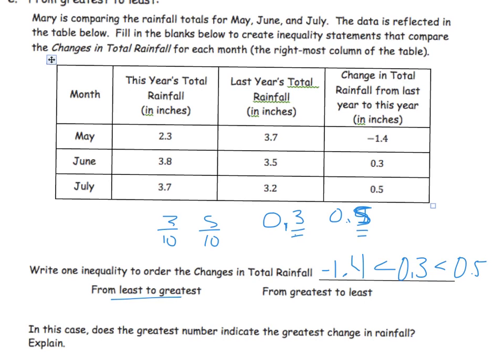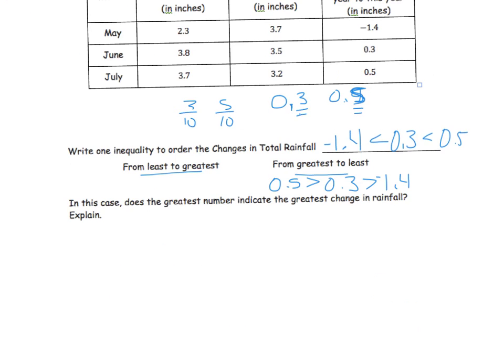So I know that this part is review as well. So we're going to say negative 1.4 is less than 0.3 is less than 0.5. Okay, so that was from least to greatest. From greatest to least, we're going to reverse it. So 0.5 is greater than 0.3 is greater than negative 1.4. I love this question because now we've ordered them, but it depends on what we're looking for. If the order gives us our answer, it says, in this case, does the greatest number indicate the greatest change? Well, here's the greatest number, but this change 0.5, think about it. It only changed in July, it only changed a half of an inch. But here, it changed almost one and a half inches, so almost three times more. So even though this is the least number, it does not indicate the greater change.